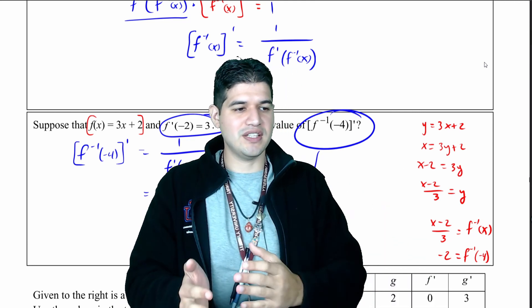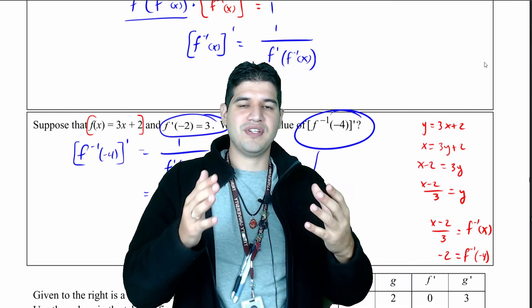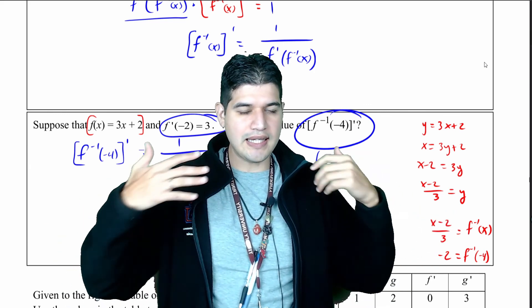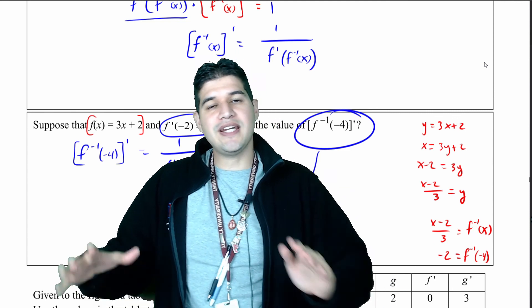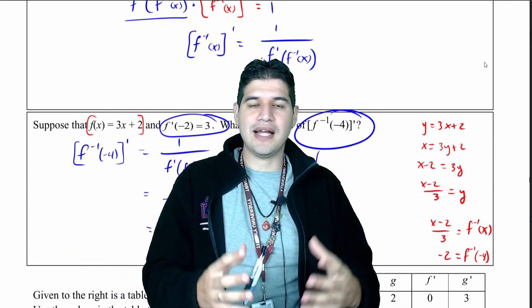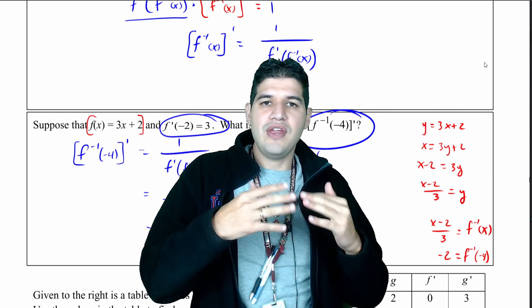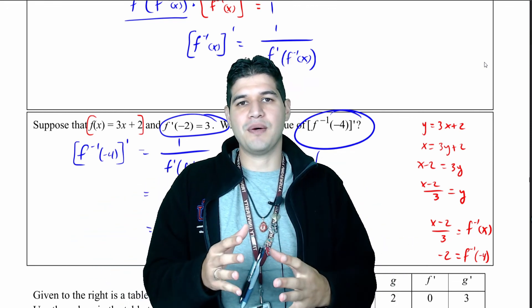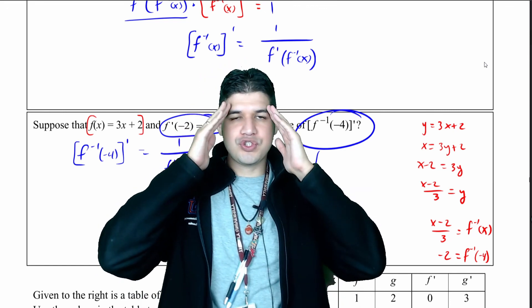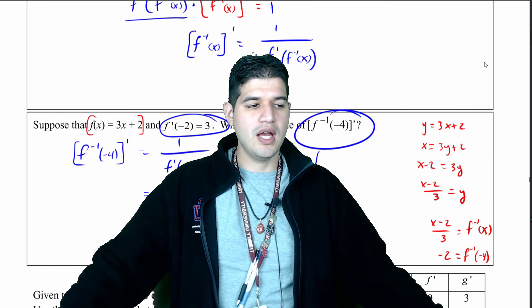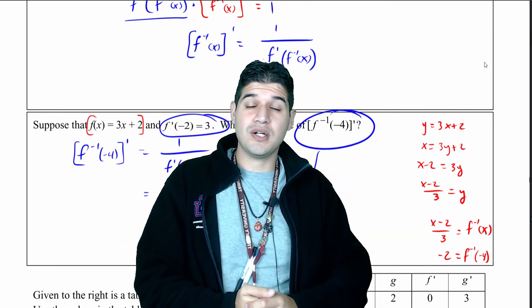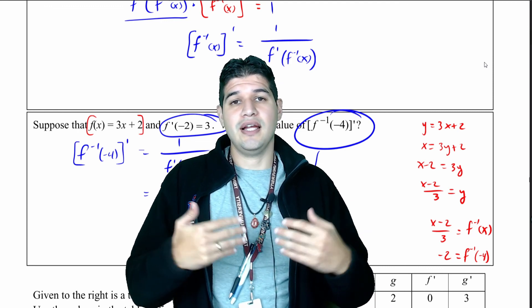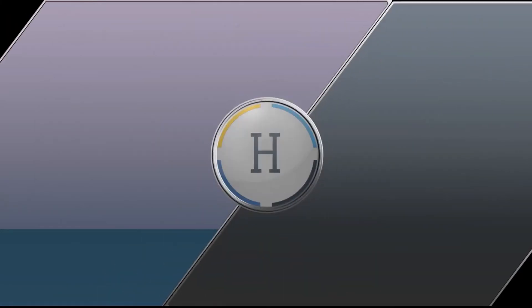The derivative of the inverse is 1 over the derivative of f evaluated at the inverse — that's how you want to keep it in mind. In our next video we're going to do some practice problems, then you have your homework, and then the review problems to prepare for your upcoming quiz and test. If you don't remember how to do inverse functions or need more practice, please reach out. I'm Mr. Hernandez, and this was Mr. Hernandez Teaches.